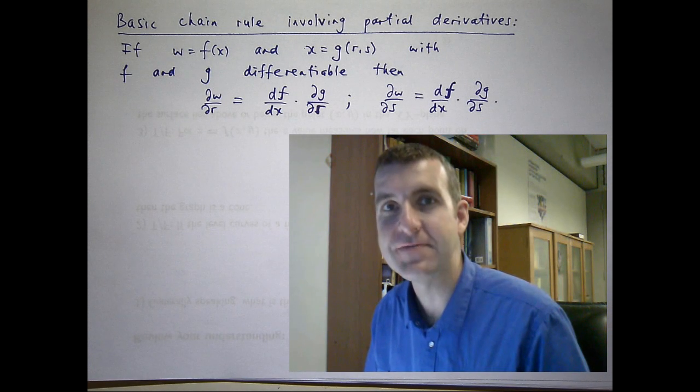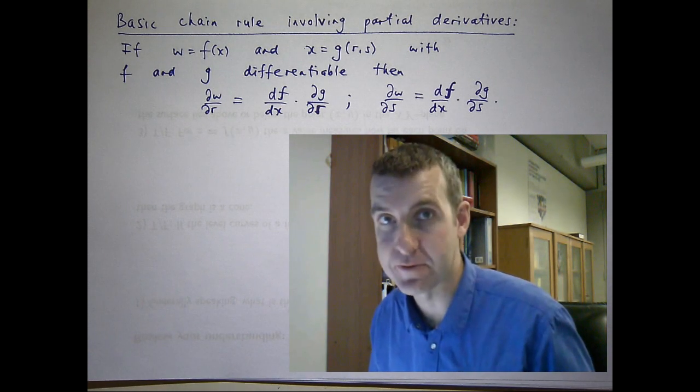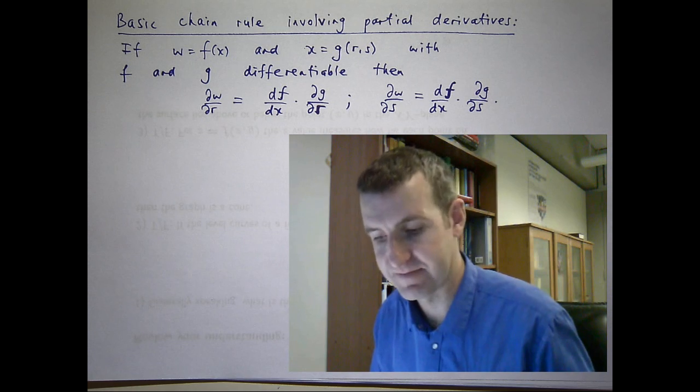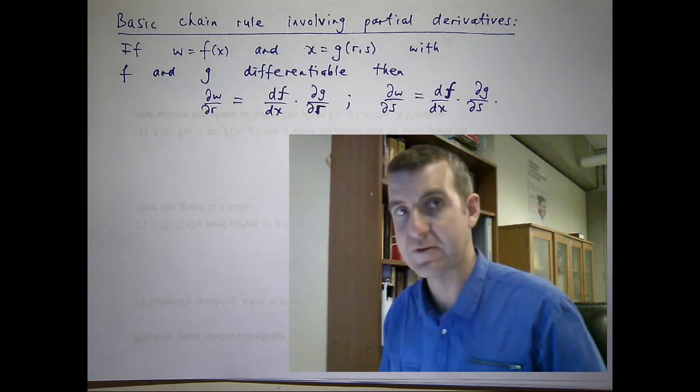Hi again, everyone. In this video, I'm going to discuss a proof for a very basic form of the chain rule involving partial derivatives. So, we have the following situation.